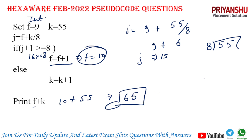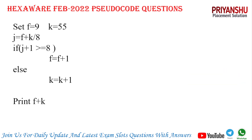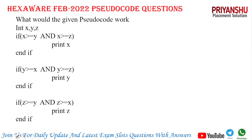These questions are from today's slot — 6th February 2022, Sunday. Next question: what does the given pseudocode do? Here x >= y, x >= z, y >= x, y >= z, x >= x — this pseudocode finds the largest or greatest value among x, y, z.